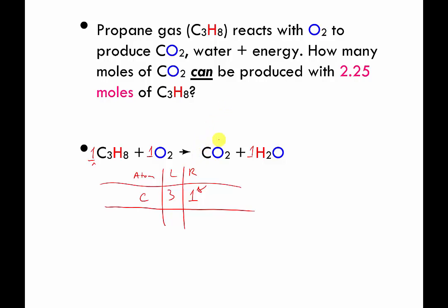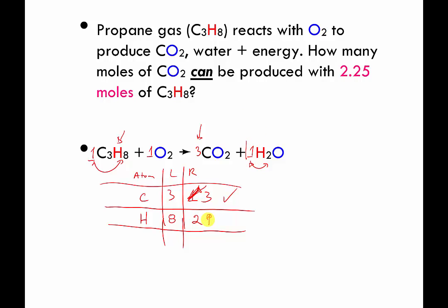We're only allowed to change numbers in front of formulas. Tripling the coefficient on the right gives three carbons on both sides — carbon is balanced. Next, hydrogen: on the left, one times eight gives eight hydrogens; on the right, one times two gives only two — not balanced. Changing that coefficient to four gives four times two equals eight hydrogens on the right, matching the left side.